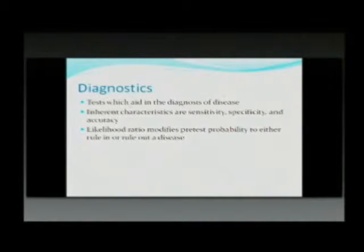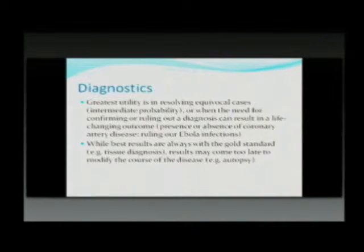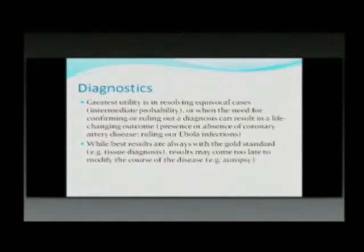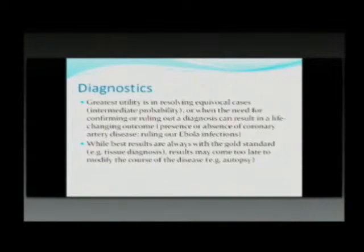The most important utility for diagnostics is really when you have cases where you're not sure what's going on. For instance, if it's a dengue case and the platelets are going down, it pretty much gives you a good clinical diagnosis. But for patients who have intermediate probability of heart disease, it's important to confirm or rule out that diagnosis because it can change the outcome in terms of whether you do some sort of intervention, especially when those interventions are invasive.